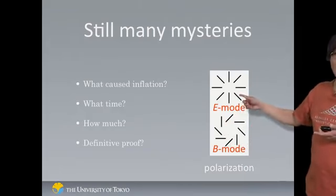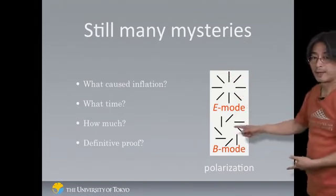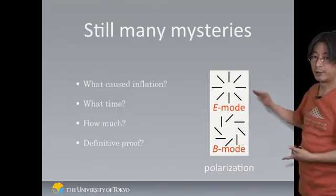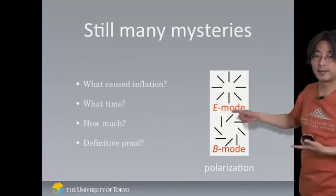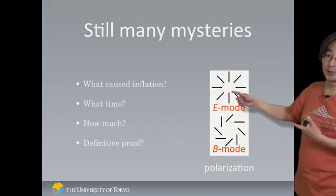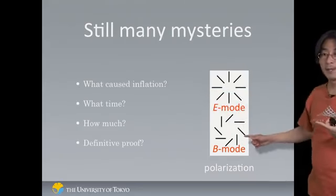One of them is called E-mode. It looks like something is sort of emerging from a point. The other one is called B-mode. It looks like something is sort of curling around. And it turns out that this E-mode can be generated without having these ripples in space-time. But B-mode cannot.